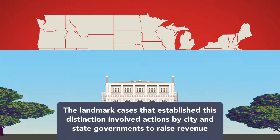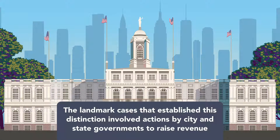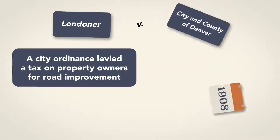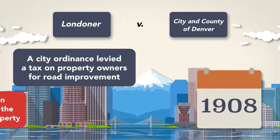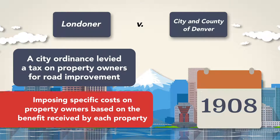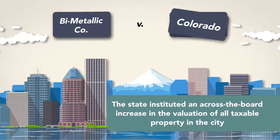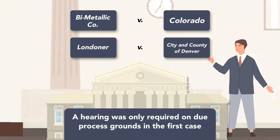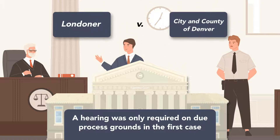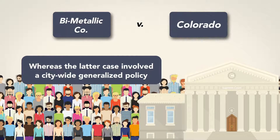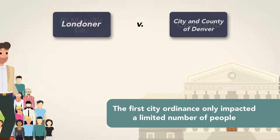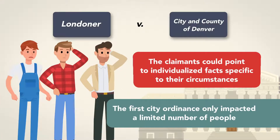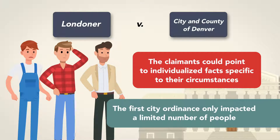The landmark cases that established this distinction involved actions by city and state governments to raise revenue. In one case, a city ordinance levied a tax on property owners for road improvement, imposing specific costs on property owners based on the benefit received by each property. In the other case, the state instituted an across-the-board increase in the valuation of all taxable property in the city. The Supreme Court distinguished between the two cases, holding that a hearing was only required on due process grounds in the first case. The court reasoned that whereas the latter case involved a city-wide generalized policy, the first city ordinance only impacted a number of people, and the claimants could point to individualized facts specific to their circumstances, which were relevant to adjudicating the city's action.